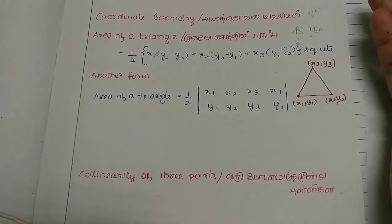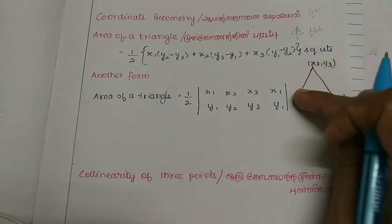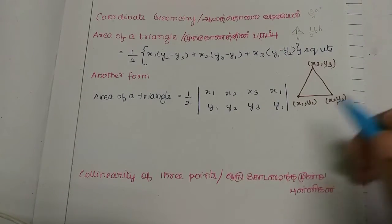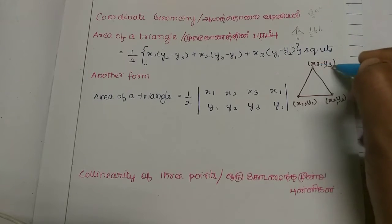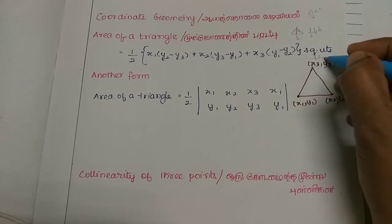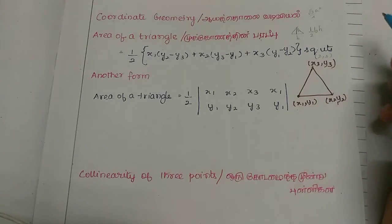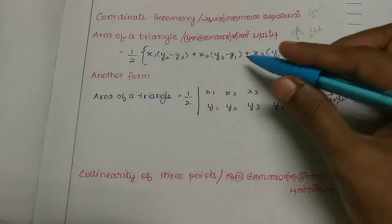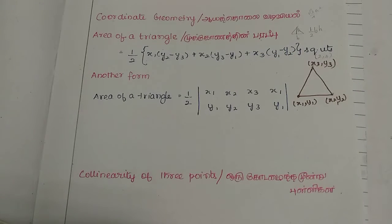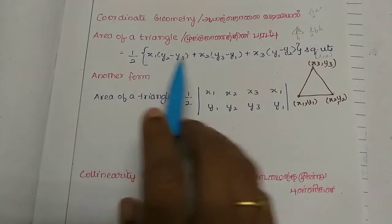We will see the sides of the triangle and look at the 3 corners of the triangle. Now the points are (2,4), (1,3). We will plot them in the graph. If you look at the area of the triangle, we will see the formula.